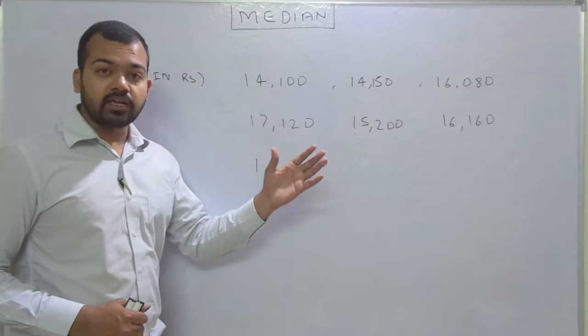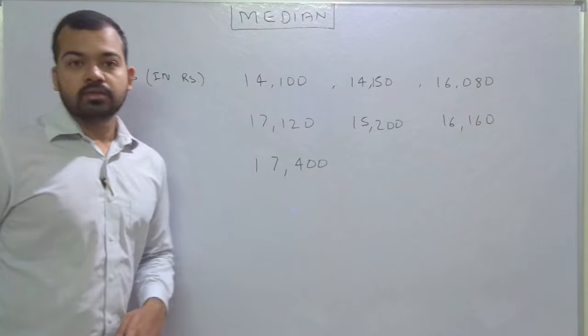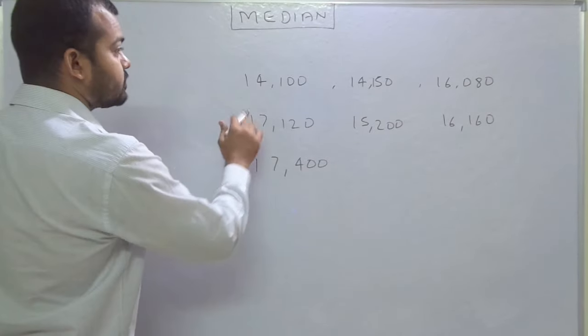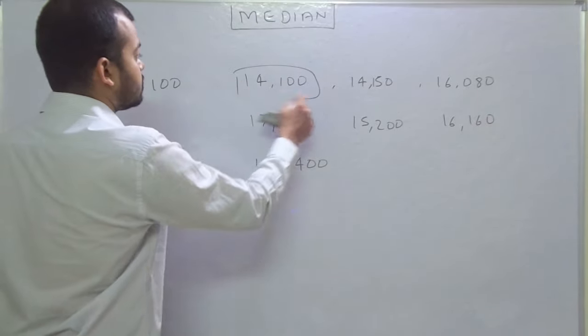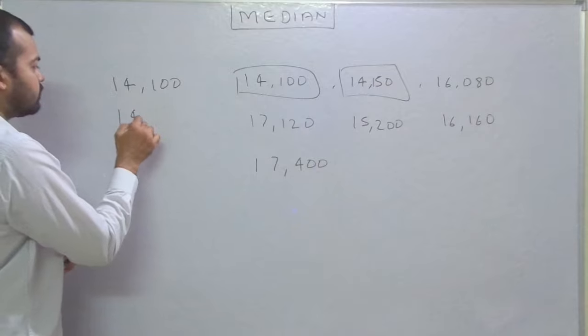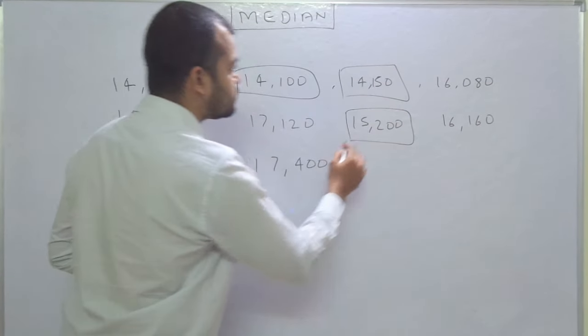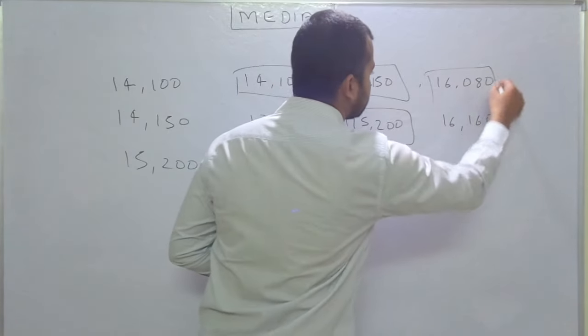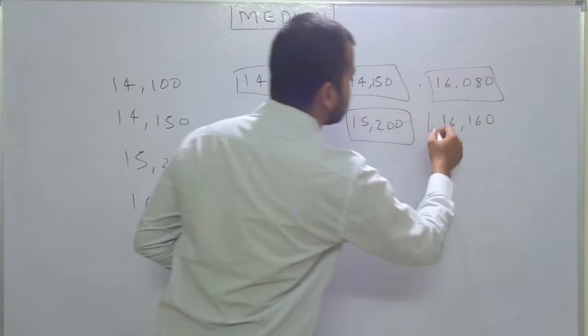We will arrange the data into chronological order. For example, the smallest number is 14,100. The second one is 14,150. The third one after 14,150 is 15,200. Now the fourth figure is 16,080. The fifth figure is 16,160.